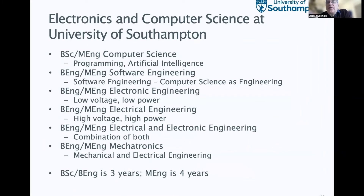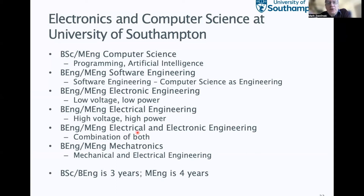In electronics and computer science we have a whole range of degrees. Computer science covers programming and artificial intelligence. We have three-year degrees — bachelors of science or engineering — and four-year masters of engineering programmes. We've got computer science, software engineering (more focused on how big systems work), electronic engineering (low voltage, low power), electrical engineering (high voltage, high power — machines and electricity generation), a combination degree, and also mechatronics, which mixes mechanical and electrical engineering covering things like electric motors and powertrains in cars.